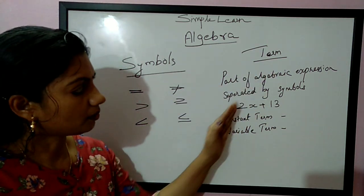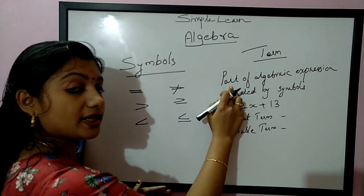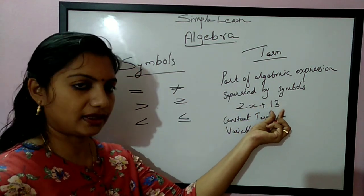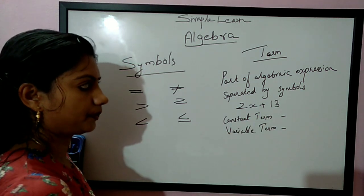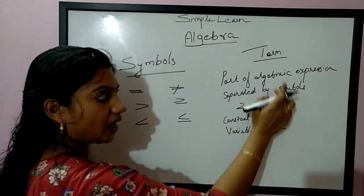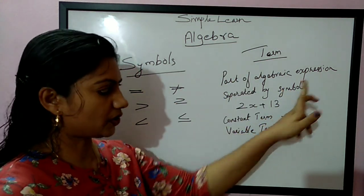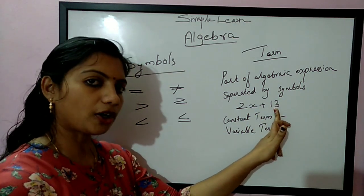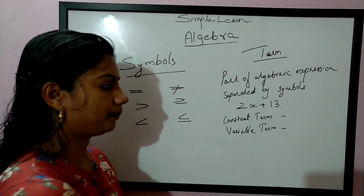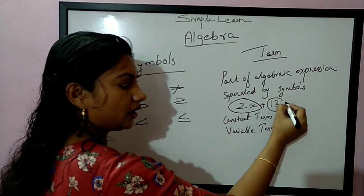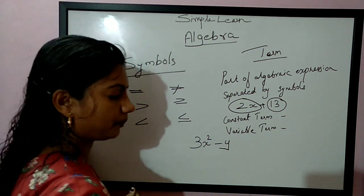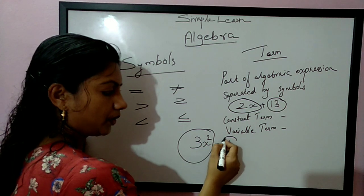We have a concept called a term. What is a term? It is a part of an algebraic expression separated by symbols. For example, 2X plus 13 is an algebraic expression. In this, 2X and 13 are the terms — they are parts of the algebraic expression separated by the addition symbol. Similarly, in 3X squared minus Y, 3X squared is a term and Y is a term.